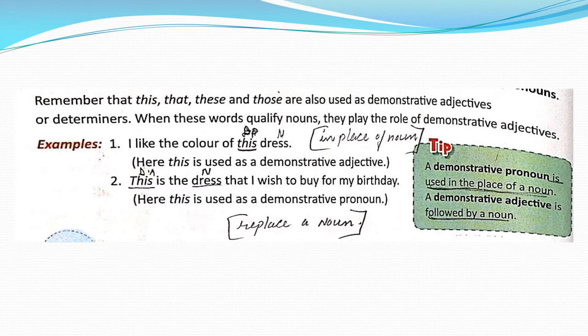Secondly, demonstrative pronouns are usually used to describe animals, places, or things. However, they can be used to describe people when the person is identified. For example, 'This sounds like Mary singing.'